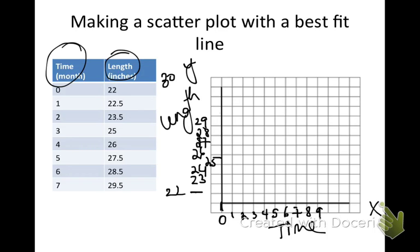Now I'm going to plot my data points. I have 0 and 22. I have 1 and 22.5. I have 2 and 23.5, halfway between 23 and 24. 3, I have 25. I'm going to pause the video, add the rest of my data points, and then I'll continue on with the next set of directions.